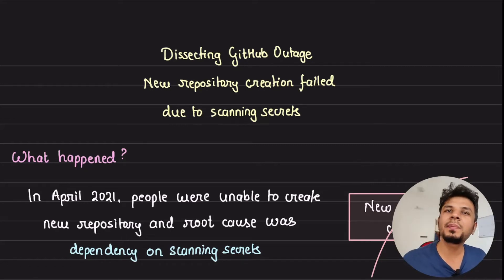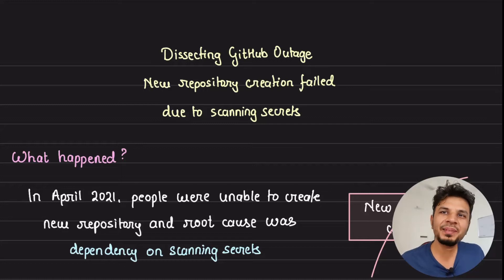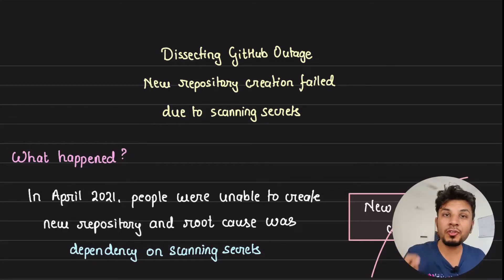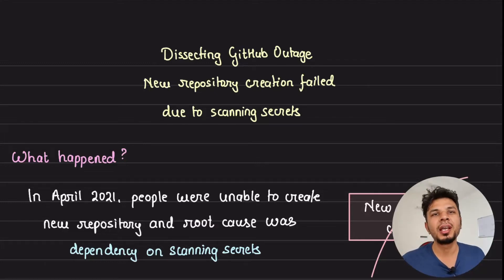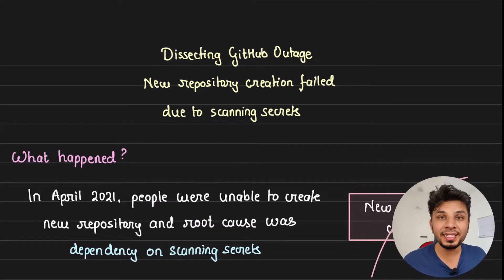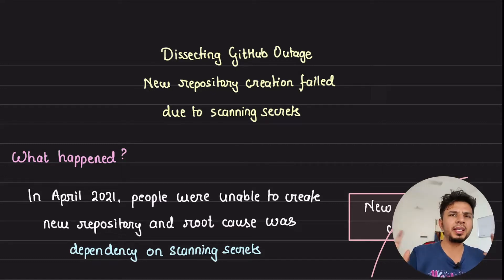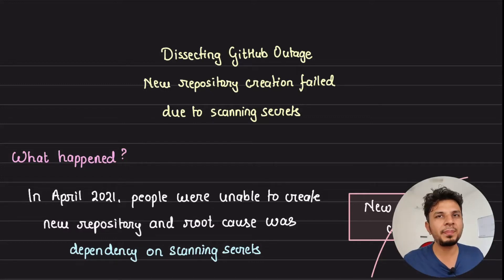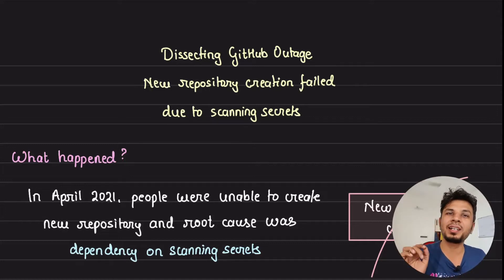Imagine you're trying to create a new GitHub repository and the API call is failing for 53 minutes. This happened with GitHub in April 2021 when for 53 minutes people were unable to create new repositories. Upon investigation they found out that the root cause was scanning secrets — two seemingly different use cases took down one of the most important APIs for GitHub. This has to be one of the most amusing outages I've seen in recent times.